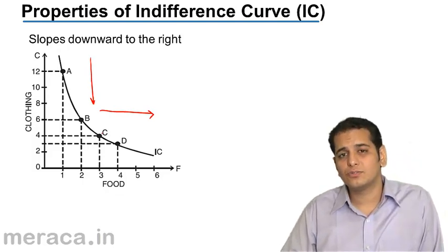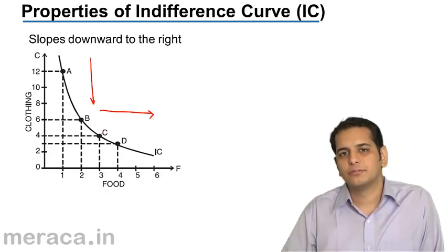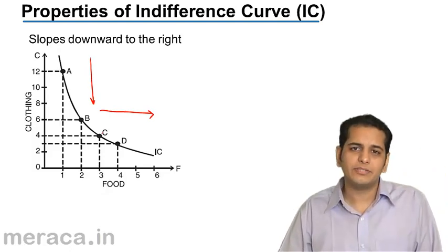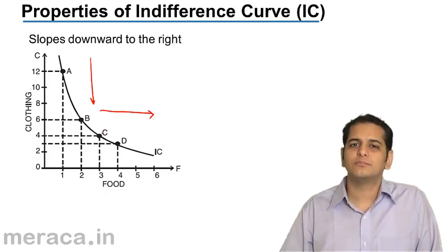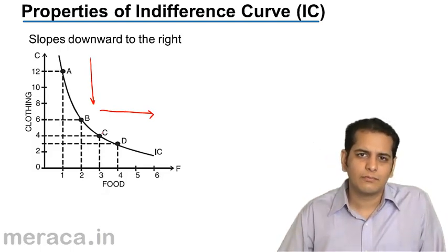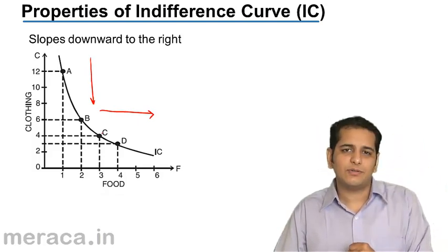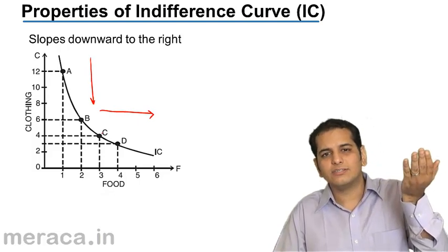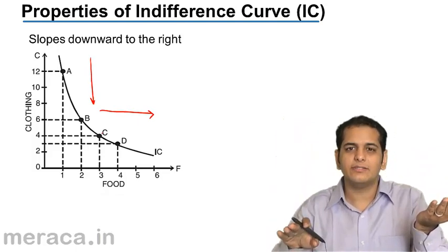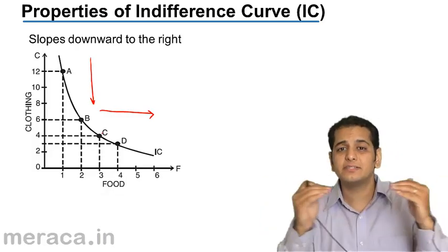Why does it slope downward from left to right? There is a logic to it. The indifference curve gives us the combination of two goods that we need to consume, and all these combinations give us the same level of satisfaction. So if I increase the consumption of one commodity, I will have to decrease the consumption of the other commodity so as to maintain the same level of satisfaction.